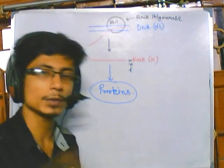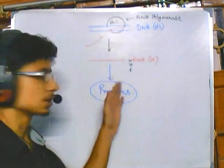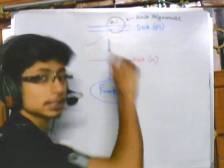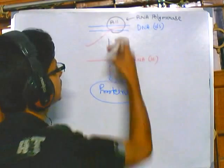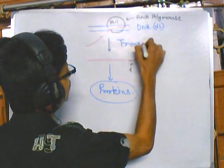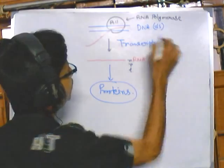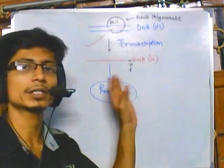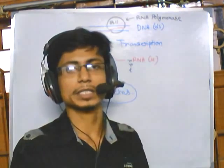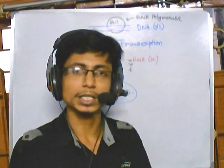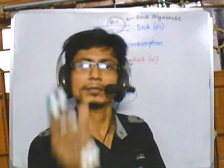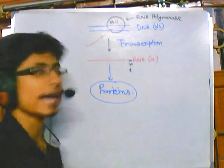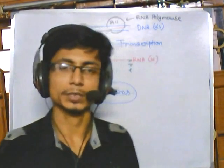According to the central dogma of biology, DNA is transcribed to RNA, then RNA is translated to proteins. In this series we are focusing on the transcription step. You must understand prokaryotic transcription before entering into eukaryotic transcription, because eukaryotic transcription involves many more enzymes and complications.